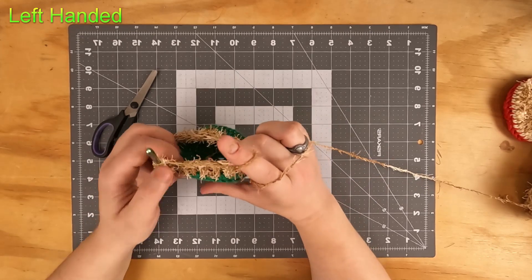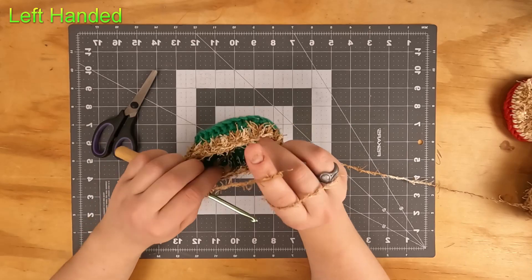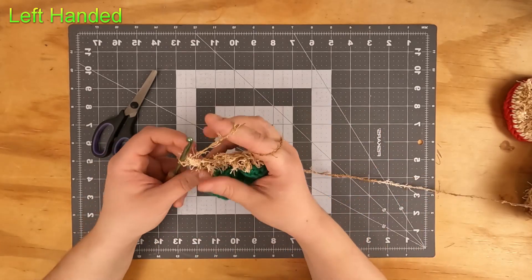We're going to be putting a double crochet decrease into each of the stitches here, so you should have 24 stitches currently and we'll be working them down to 12 stitches now.